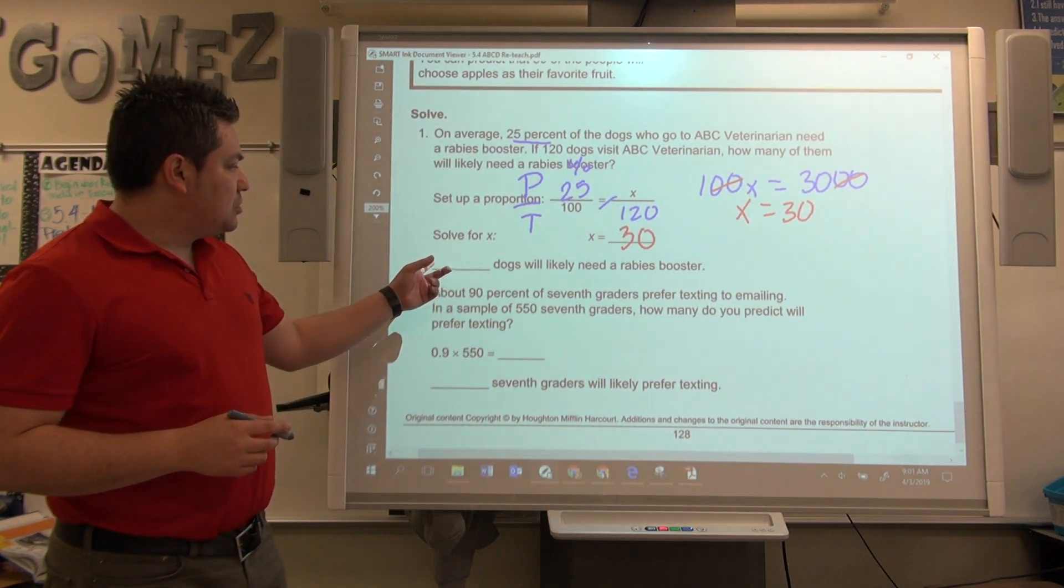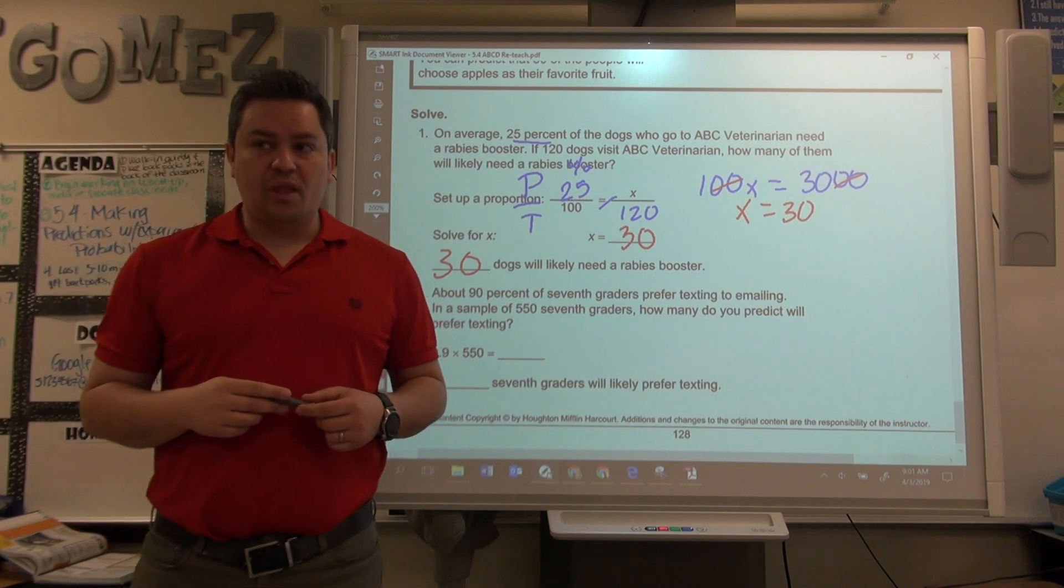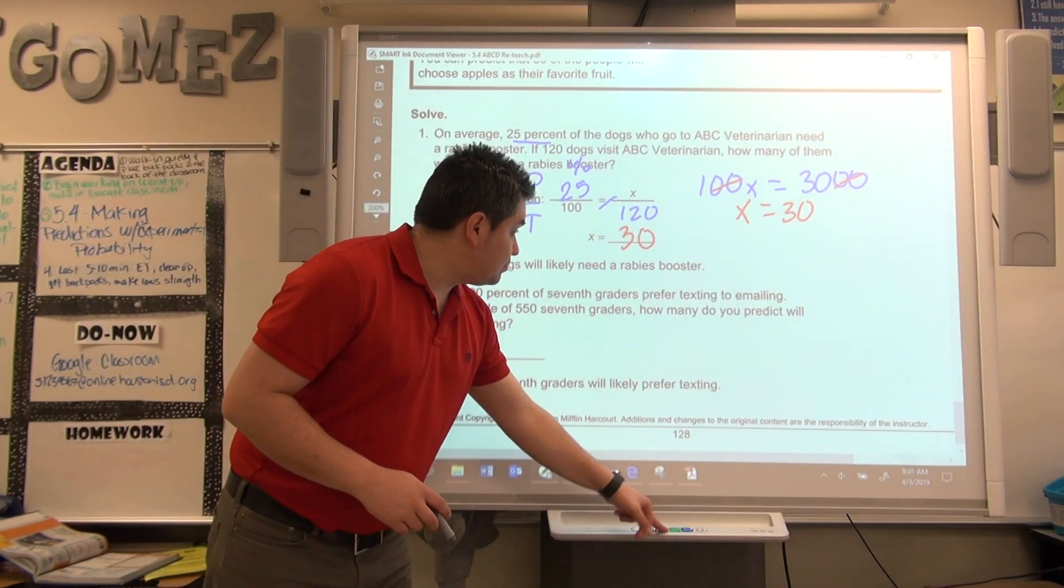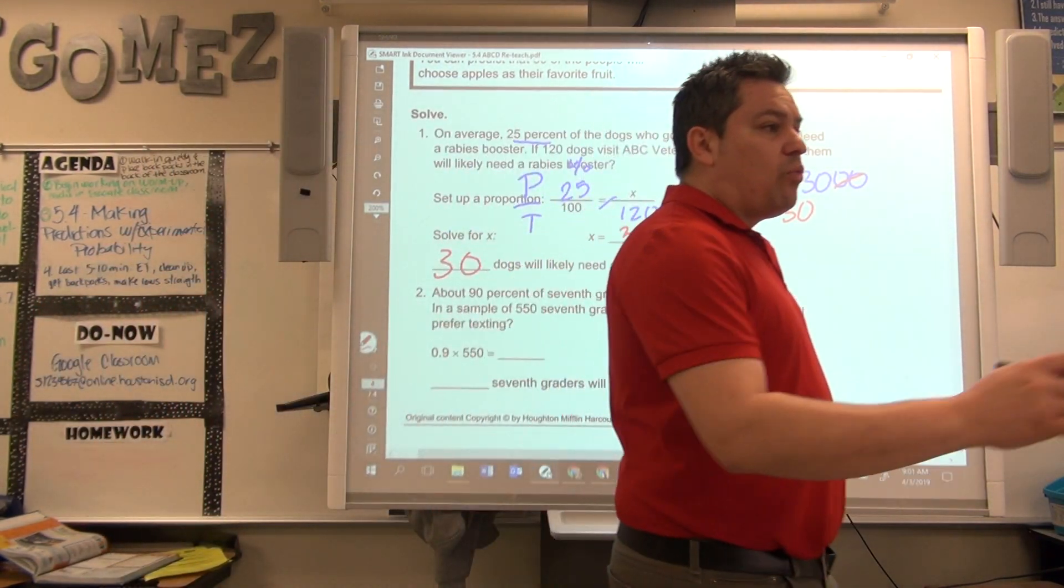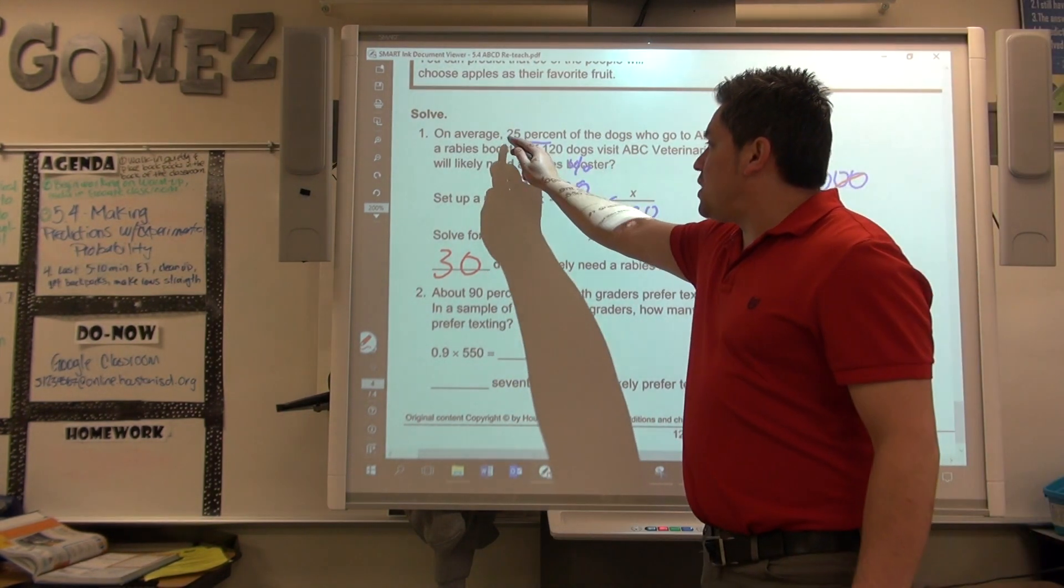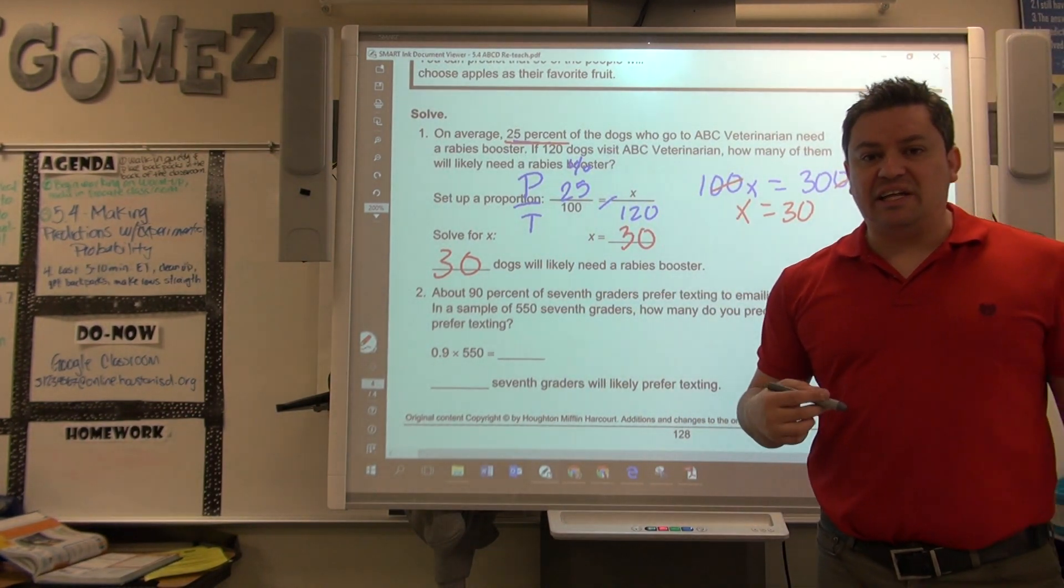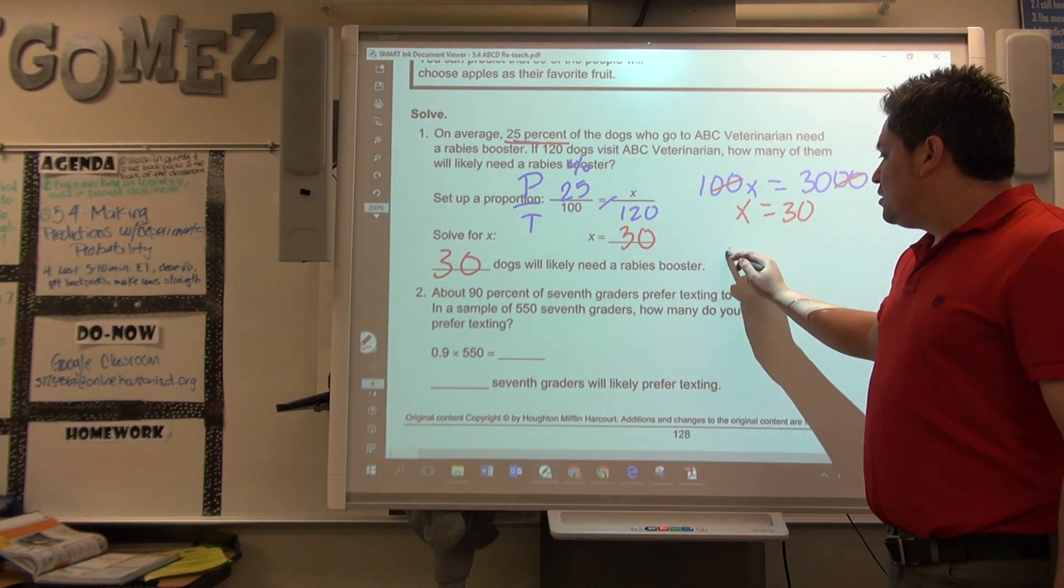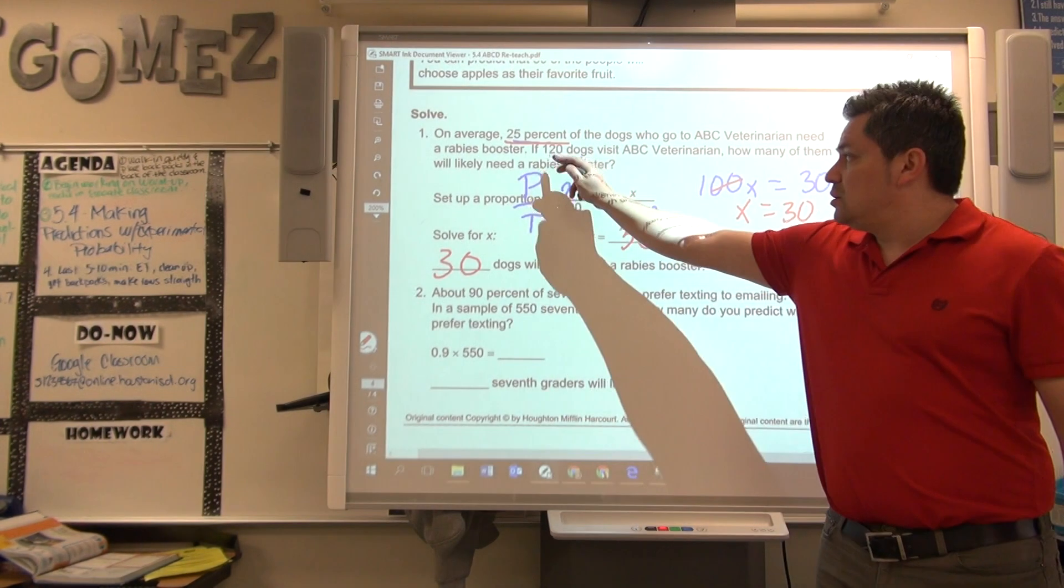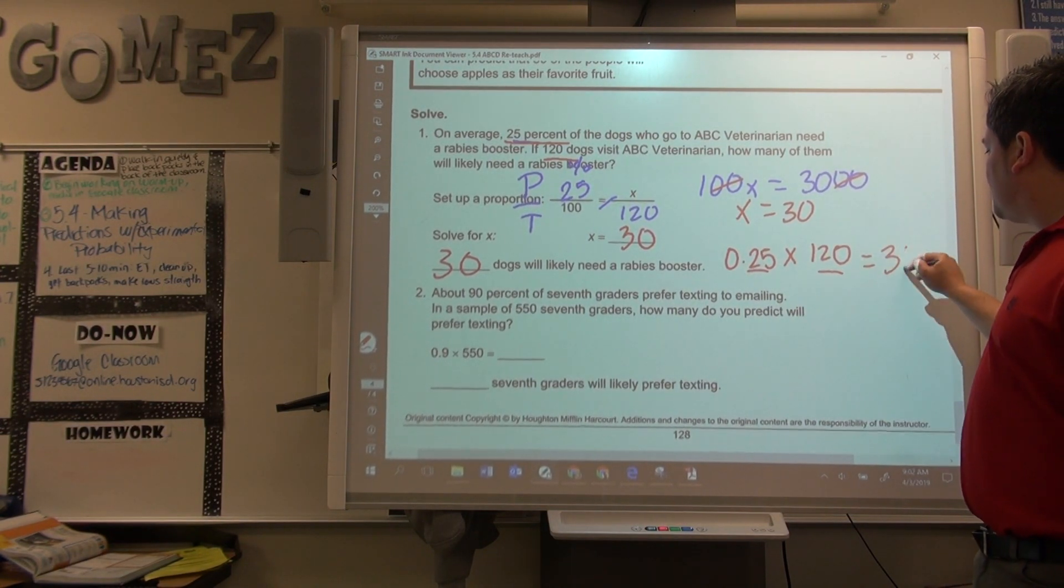Now, so for X, what I already did is right here, 30 dogs will likely need a rabies booster. How would you do this the other way? I'm going to do it on red, down here. Again, we're given a percent amount. That percent is right here. That's the multiply way. Convert that percent to decimal. 25% as a decimal is what? 0.25 times, how many dogs? 120. When you multiply that and this, you also get 30.